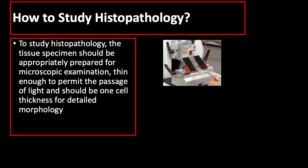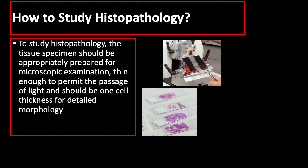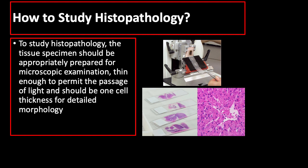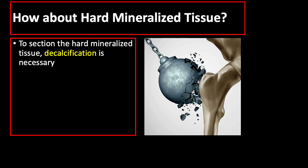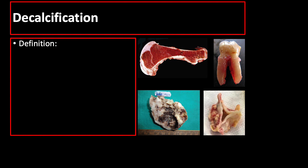Good morning, students. Our topic for today is about decalcification. To study histopathology, the tissue specimen should be appropriately prepared for microscopic examination, thin enough to permit the passage of light, and should be one-cell thickness for detailed morphology. How about hard mineralized tissue? How do we cut and section it for histopathologic study? To section the hard mineralized tissue, decalcification should be done so that the mineralized tissue becomes compatible for sectioning and subsequent staining.